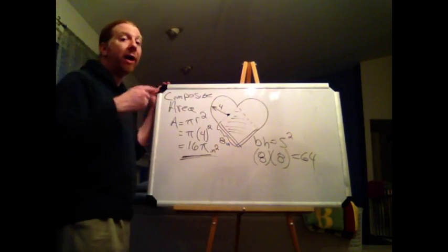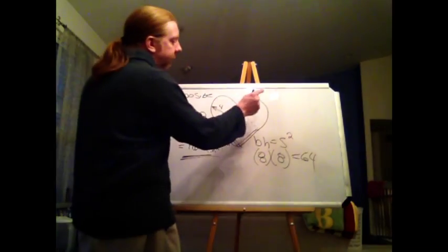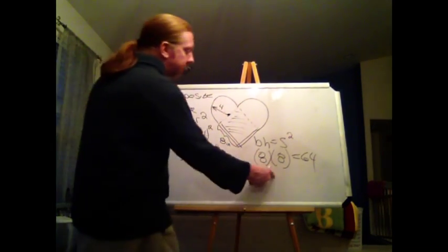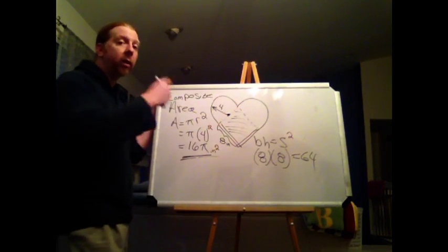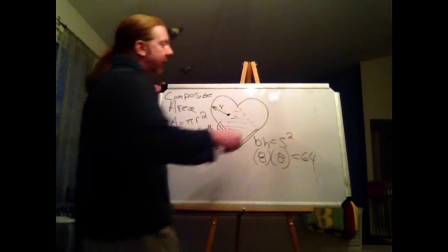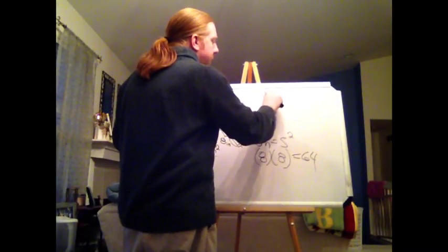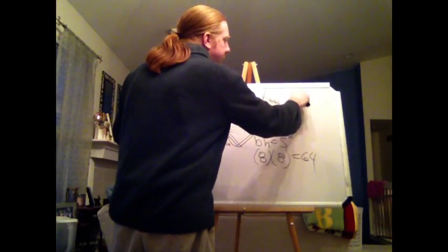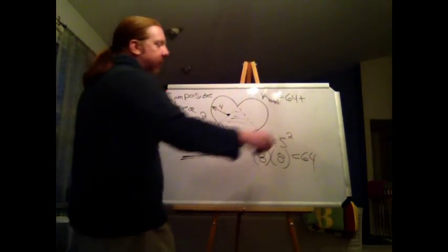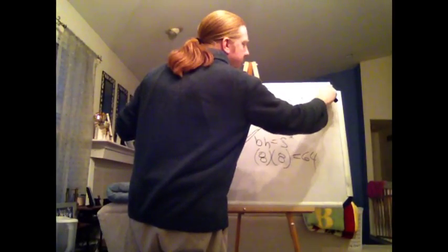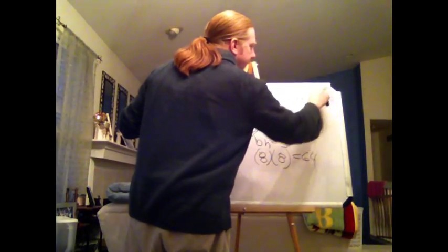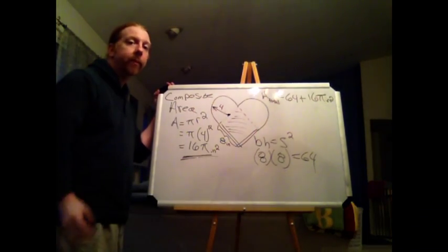So when I add my two half circles together, half circle plus half circle for 16 pi, plus the square in the middle of my heart, I'm looking at a total area of 64 plus 16 pi square inches. And there you go.